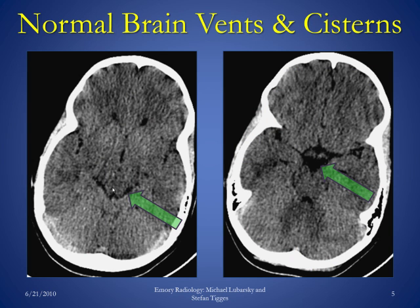On this image, we can see additional structures called basilar cisterns. They are called basilar because they are at the base of the brain, and cisterns because they contain cerebrospinal fluid. These containers of cerebrospinal fluid at the base of the brain also communicate with the ventricular system. On the image on the left, you can see the quadrigeminal plate cistern and the ambient cisterns. On the image on the right, you can see the suprasellar cistern, which has a star-shaped appearance.